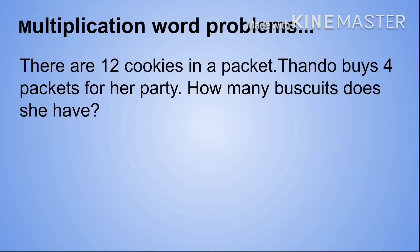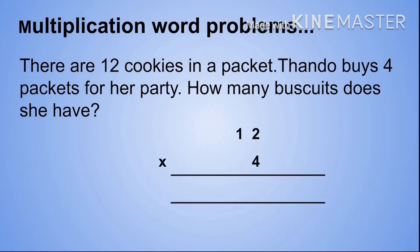There are 12 cookies in a packet. Tando buys 4 packets for her party. How many biscuits does she have? Our equation will be 12 times 4. Step 1: times our multiplier 4 by our unit 2, so 2 times 4 equals 8. Step 2: times our multiplier 4 by our tens digit 1, so 1 times 4 equals 4.